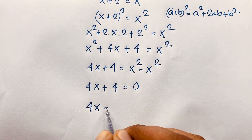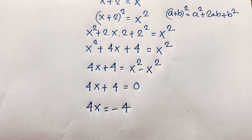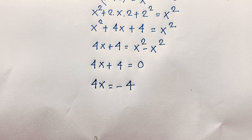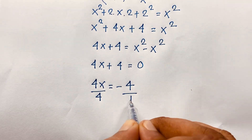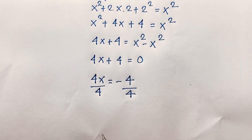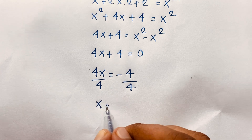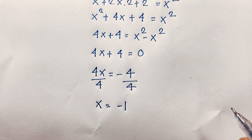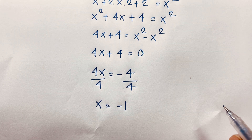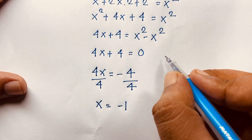Moving 4 to this side gives 4x = -4. Dividing both sides by 4, we find x = -1.